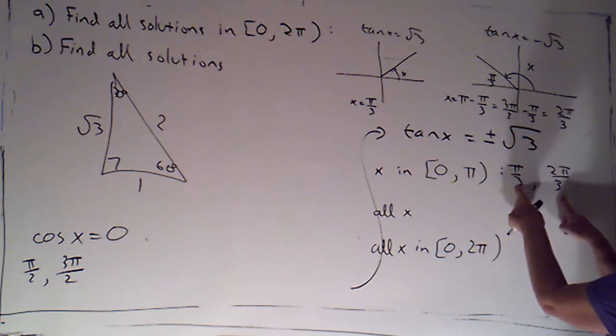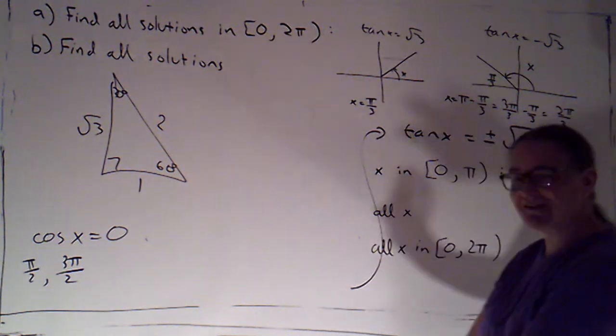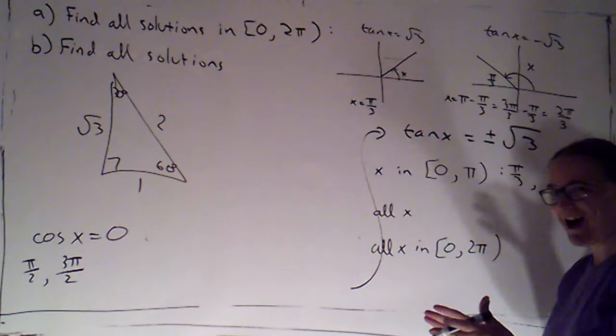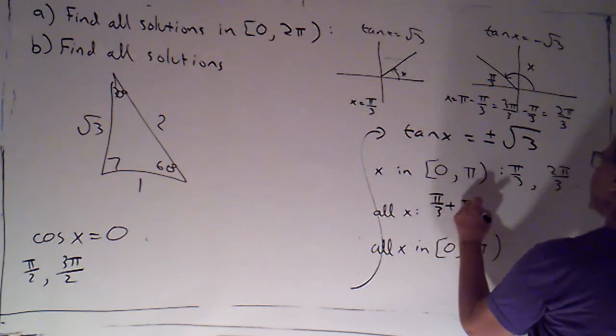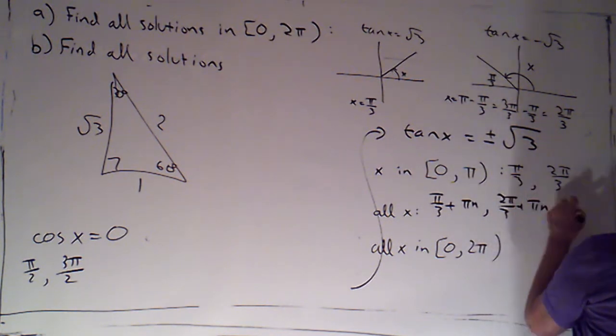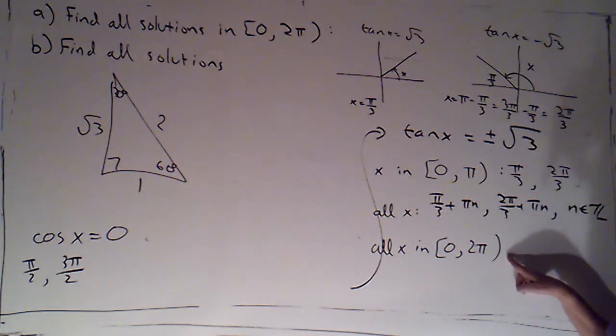Now, those are my two solutions in one period of tangent. I'm going to get all solutions by adding a multiple of the period. But the period is just pi, not 2 pi. So, I'll have pi over 3 plus pi n, 2 pi over 3 plus pi n, where n is an integer.